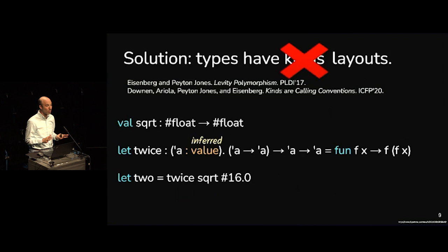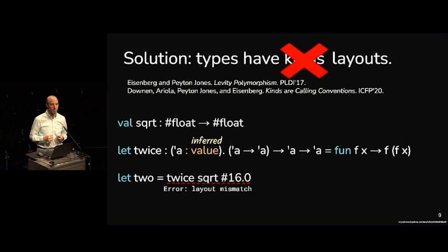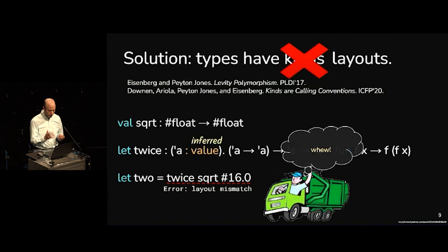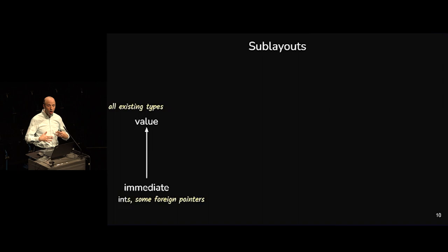In this example the type variable alpha has layout value. It turns out we don't actually need to write that in our code — we'll infer that the old version of twice works just fine — but I want to be explicit on the slide. When I try to call twice on square root and 16, we get a layout mismatch: I can't instantiate alpha to hash float because hash float is not a value. The garbage collector is now saved and very happy.